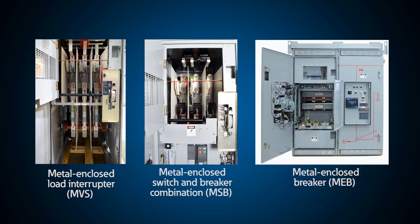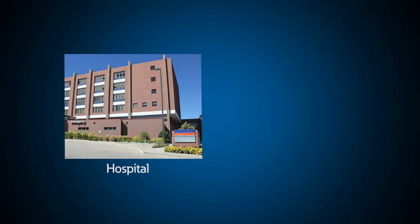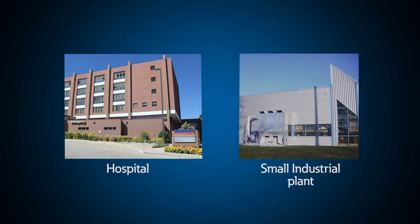Metal-enclosed switchgear contains circuit protection devices including circuit breakers, power fuses, and fusible switches, as well as control and metering equipment. These devices can be fixed-mounted in common compartments and do not require the separate barriers or compartmentalization required in metal-clad switchgear. Metal-enclosed switchgear is applied in commercial and many industrial facilities where the rugged construction of metal-clad may not be required.